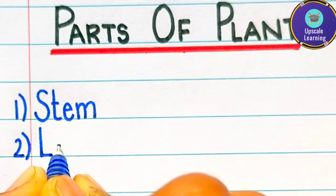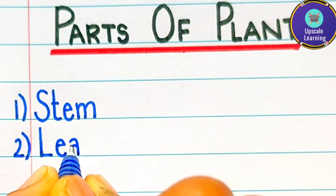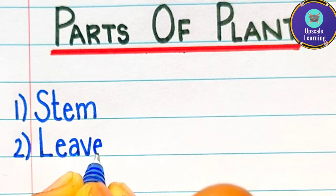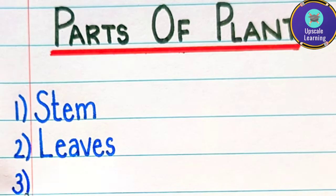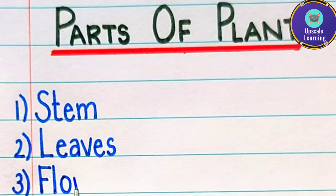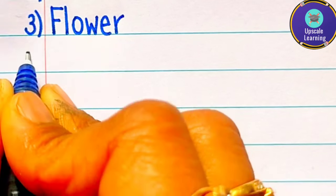Second one is leaves, l-e-a-v-e-s, leaves means patya. Third one is flower, f-l-o-w-e-r, flower means fool.